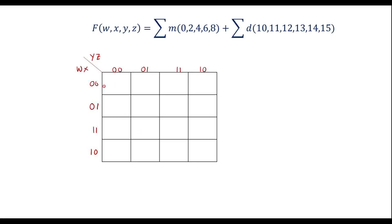Let me write the cell numbers. As we know, the cells are numbered 0 through 15: cells 0, 1, 2, 3 in the first row; 4, 5, 6, 7 in the second; 8, 9, 10, 11 in the third; and 12, 13, 14, 15 in the last row.